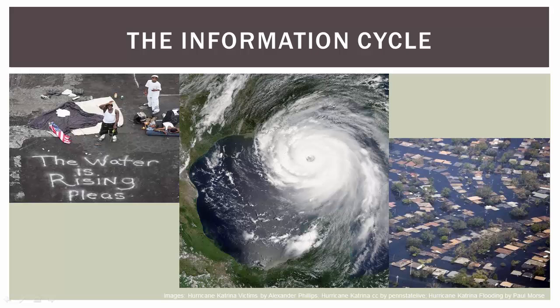Over the following days, newspapers covered the event in more detail, adding layers to the story and considering related issues like the structure of the levee system and the state of emergency shelters. In the following weeks, magazines joined the coverage of Hurricane Katrina, weighing other issues such as the federal government's response.